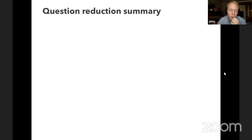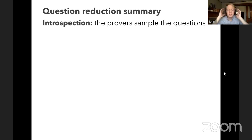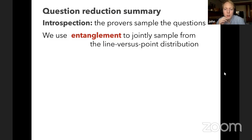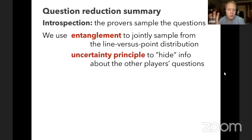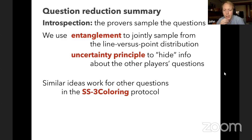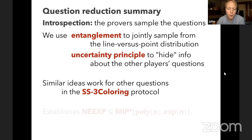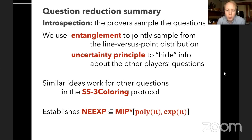That was question reduction. In summary: we used introspection to have the provers sample the questions for us, entanglement to have them jointly sample from the line versus point distribution, and the uncertainty principle to hide information about the other player's questions. Similar ideas work for the other questions in the succinct succinct three coloring protocol. This establishes that NEEXP is contained in MIP* with polynomial-size questions and exponential-size answers.